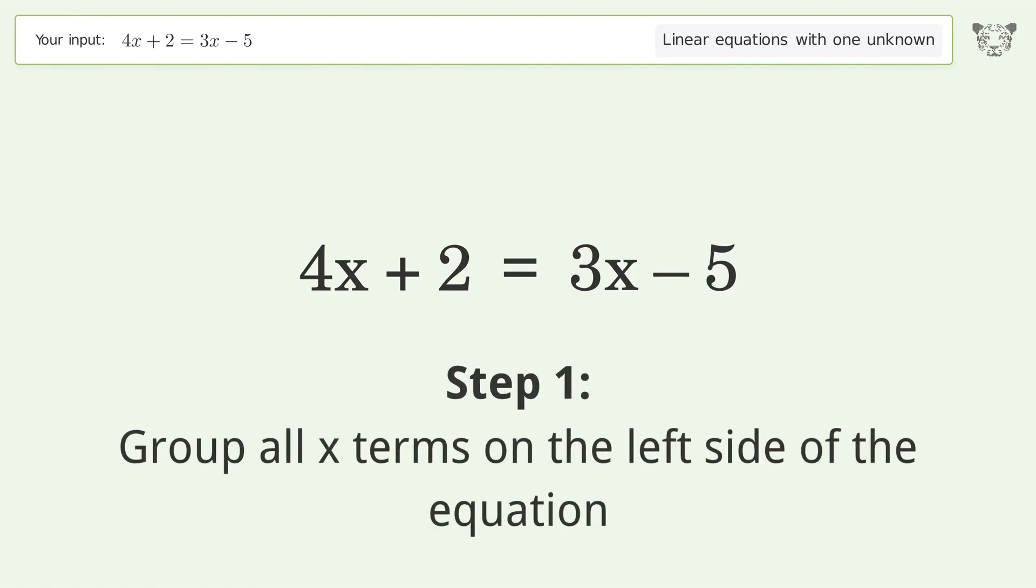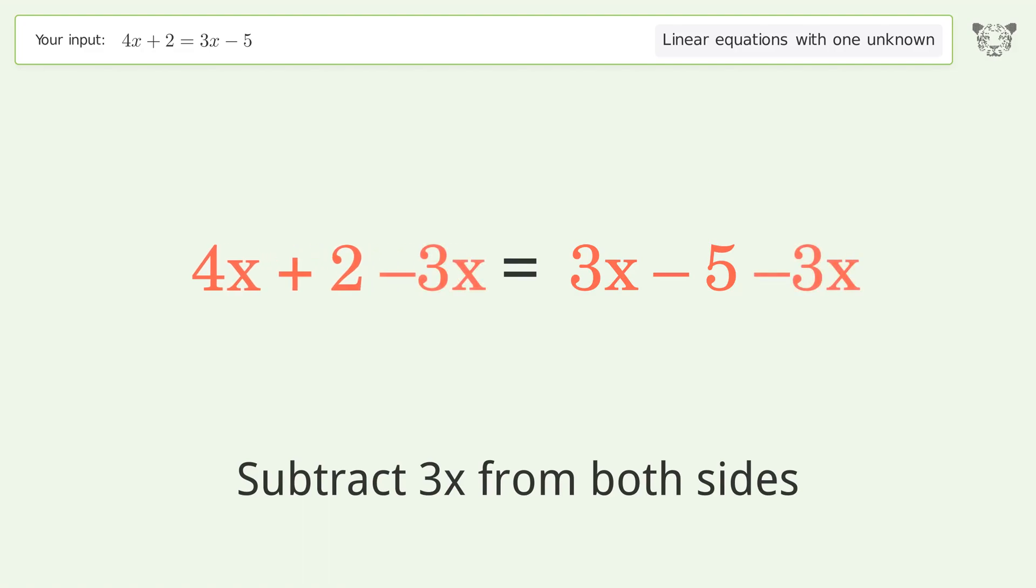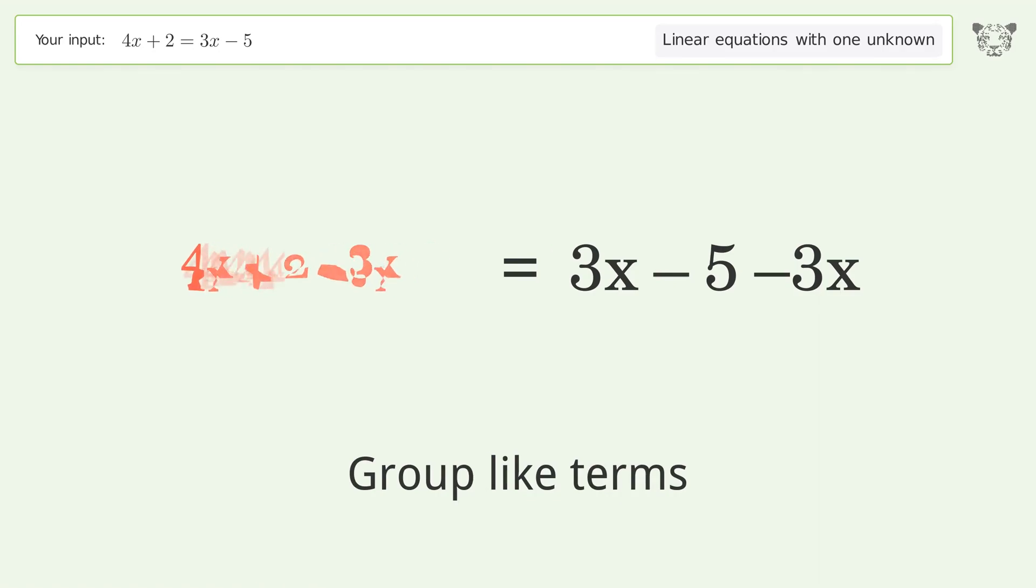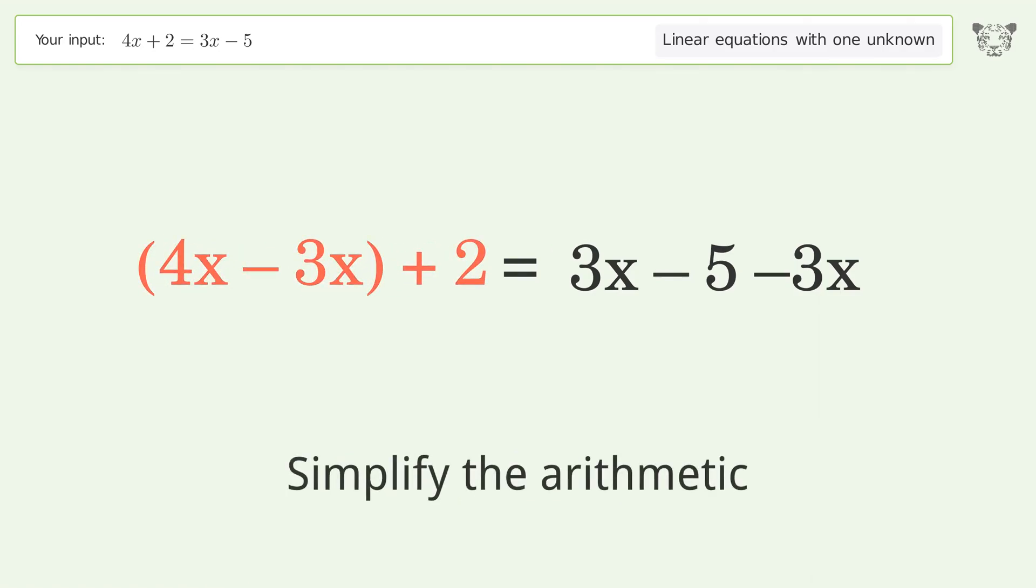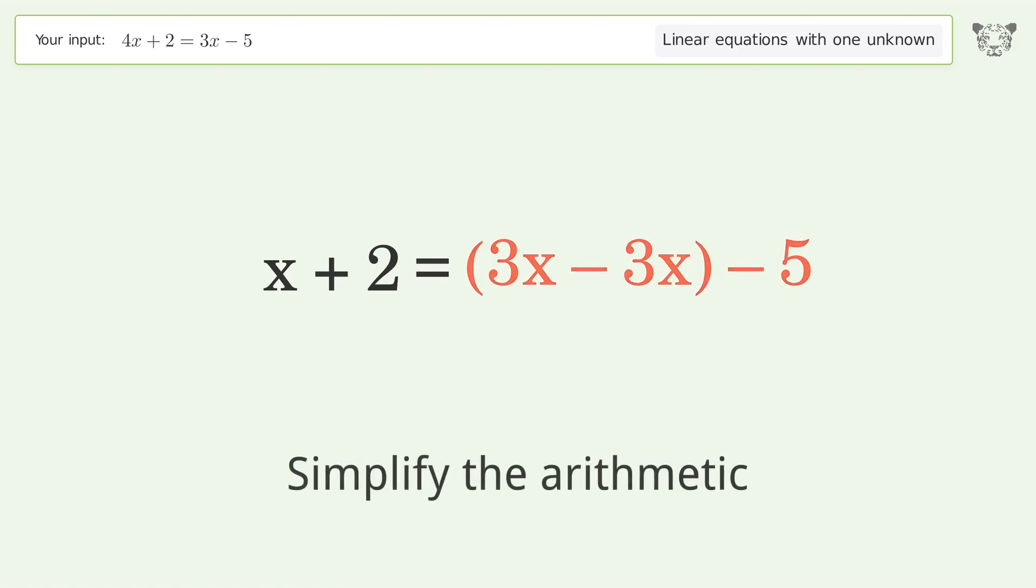Group all x terms on the left side of the equation. Subtract 3x from both sides. Group like terms. Simplify the arithmetic. Group like terms and simplify the arithmetic.